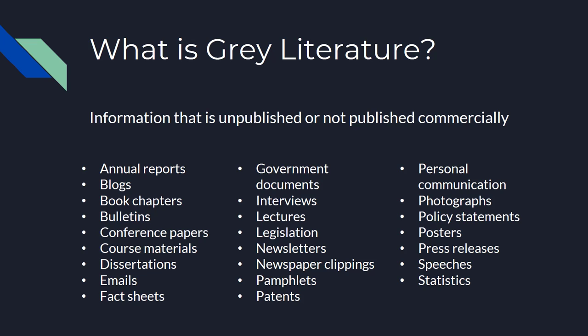Gray literature is in opposition to black literature or black and white literature, which are peer-reviewed publications in commercial databases — aka journal articles — that you can find by searching PubMed, Google Scholar, etc. Most of your research is going to be done using peer-reviewed published studies and referring to those.